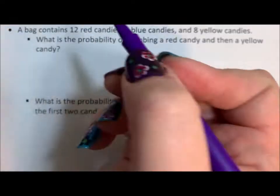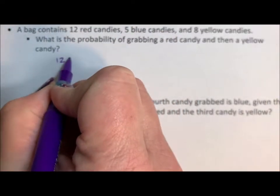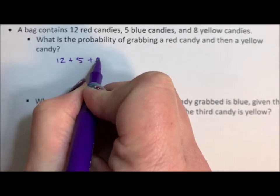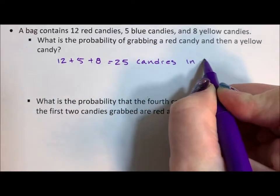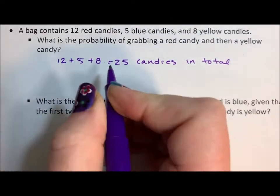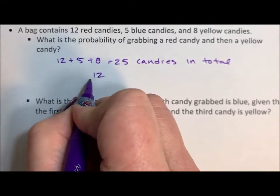Okay, so a red candy. Well, first of all, we need to know the total. There's 12 plus 5 plus 8, so there are 25 candies in total. So the probability of a red is 12 out of 25.